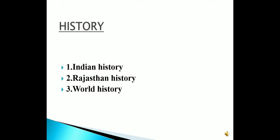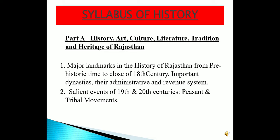History covers Indian History, Rajasthan History, and World History. The syllabus of history includes: first, prehistoric times to close to the 18th century, in which all civilizations like Kalibangan are included, along with important dynasties and their administrative and revenue systems. Second, the salient events of the 19th and 20th centuries, which include peasant and tribal movements.